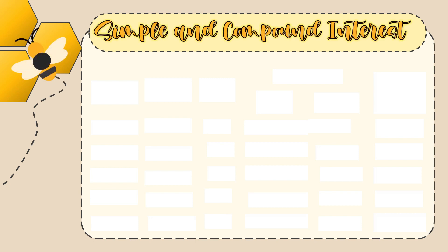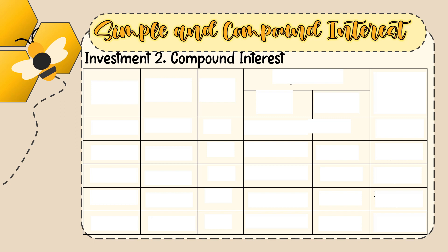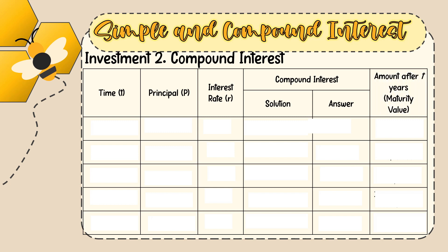Now let's look at the bank's compound interest offer. For year 1, the principal is 10,000 with a 2% interest rate. Solution: 10,000 × 0.02 × 1 = 200. Maturity value is 10,000 + 200 = 10,200 pesos — same as simple interest for the first year.